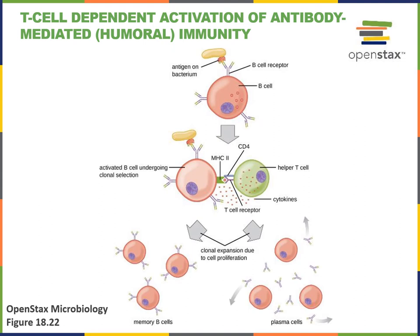The activated helper T cell then releases cytokines that complete the activation of the B cell. Now that the B cell is completely activated, it will divide and go through clonal selection, making the effector plasma cells as well as memory B cells.